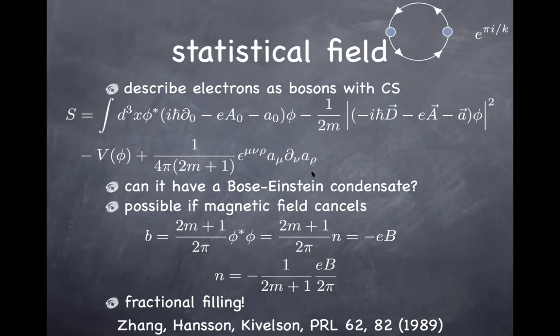You can take the derivative of this action with respect to the real gauge field and work things out under this condition. You find indeed that 1/(2n+1) is the conductivity, giving a fractional conductivity — thanks to this statistical degree of freedom in the system. This is how you use the statistical field: it leads to this new kind of Bose-Einstein condensate where the magnetic flux is cancelled by the statistical magnetic field, giving the condition that the number density realizes this fractional Hall conductivity.